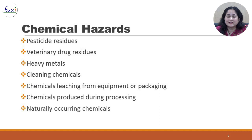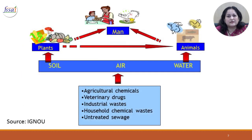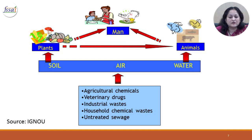Moving on to chemical hazards. These include pesticide residues, veterinary drug residues, heavy metals, cleaning chemicals from equipment and processing plants, chemicals which leach from equipment or packaging into the food, chemicals produced during processing of food, and some naturally occurring chemicals present in plant or animal foods. These chemical contaminants can enter our food chain because of agricultural chemicals, veterinary drugs, industrial wastes thrown into soil, air and water, as well as chemical waste from households and untreated sewage. The plants growing in the soil and animals feeding on these plants can get contaminated by these various chemical contaminants.